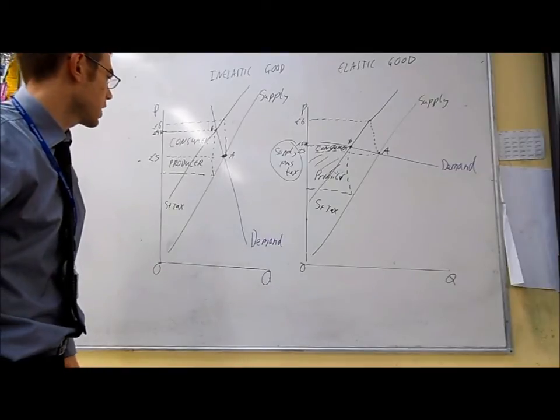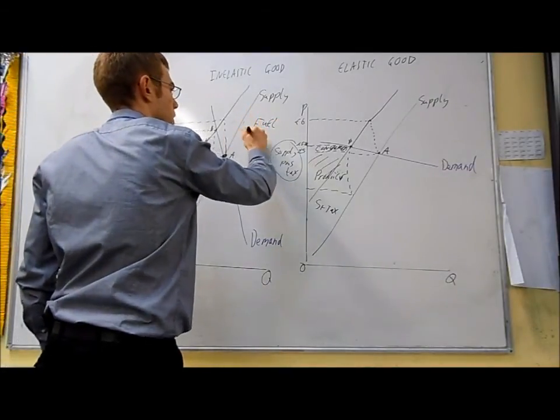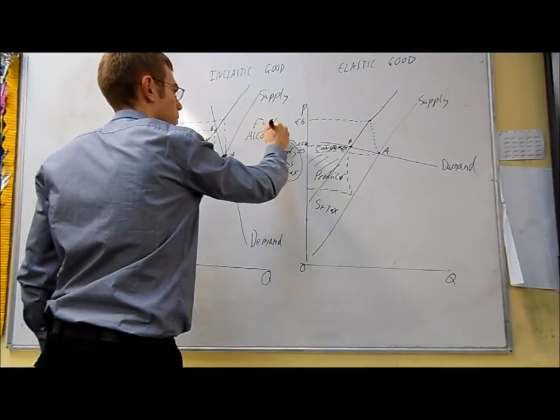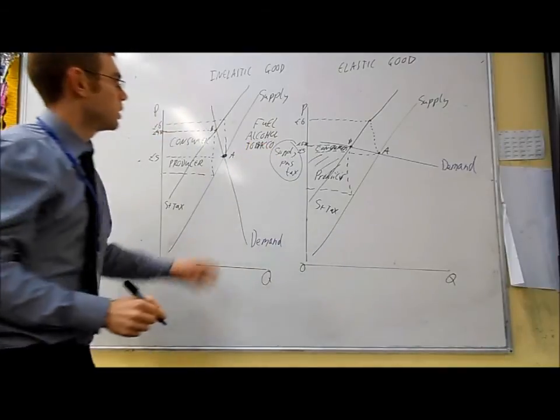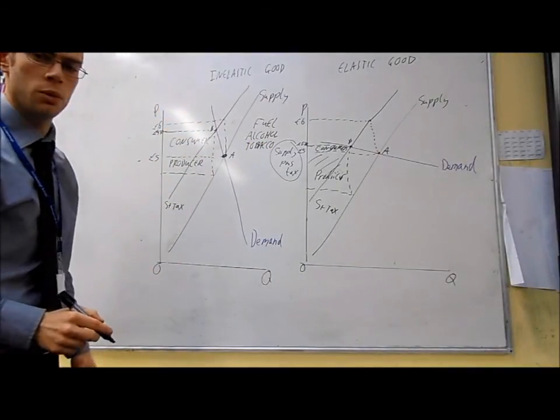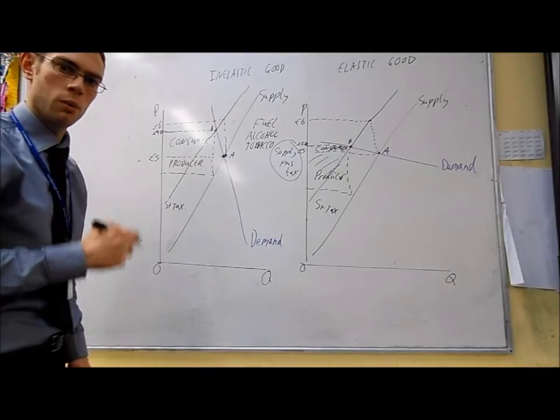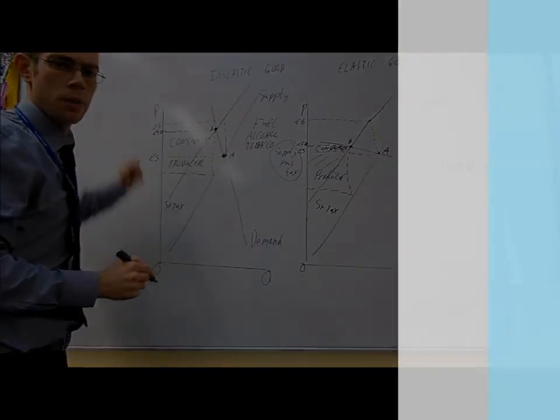Think of the products that usually have taxes placed on them. We might have fuel, alcohol, tobacco. All of them fall into our inelastic goods. All of them products that we assume that we'll have to pay the tax. Well, we probably will. But by using supply and demand diagrams, we can show why.